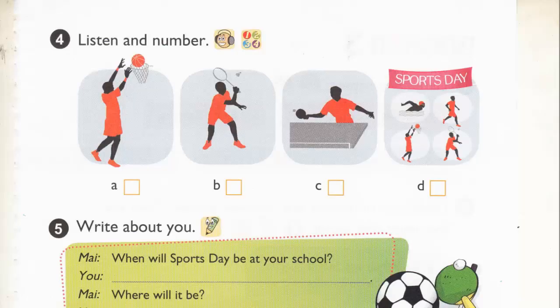Page 67. Activity 4. Listen and number. When will sports day be? It'll be on Saturday. Will you take part in it? Yes, I will. What are you going to do on sports day? I'm going to play badminton. I like badminton. Let's play it together.